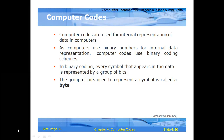Computer codes are used generally in the representation of data in computers. Computers use binary numbers for internal data representation. Computer codes use a binary coding scheme. The internal representation stores data using binary zeros and ones, and that kind of language is called a computer code.